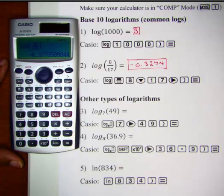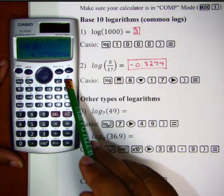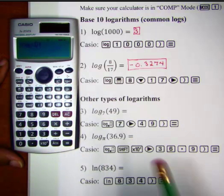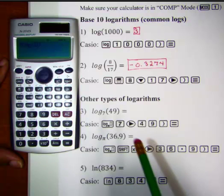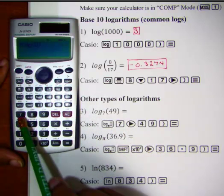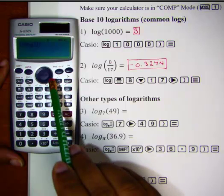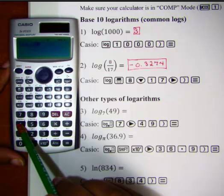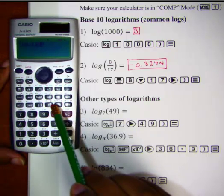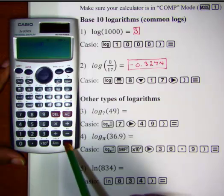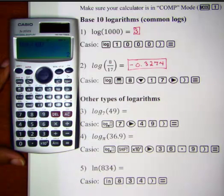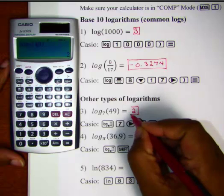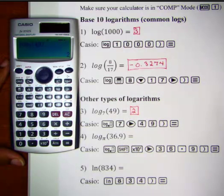So to evaluate this particular logarithm, we are going to select this log key and the cursor is in the base position. So we are going to enter in our 7 as our base number. Let's move out of the base into the argument position, type in our 49, close the parenthesis and then hit equals. And we see that the answer is 2. That makes sense because 7 to the second power is 49.